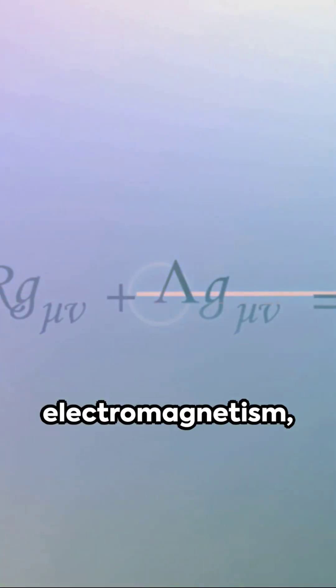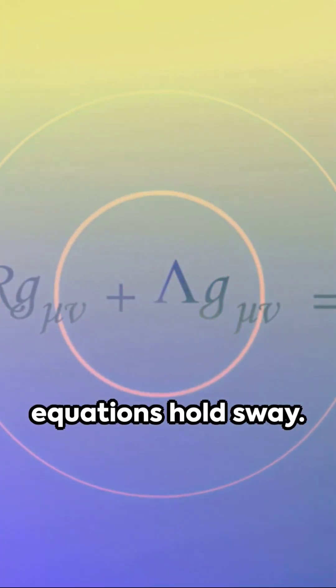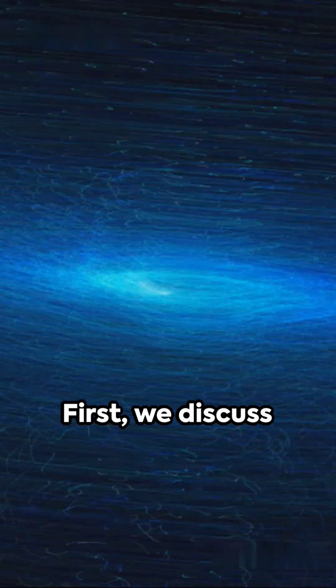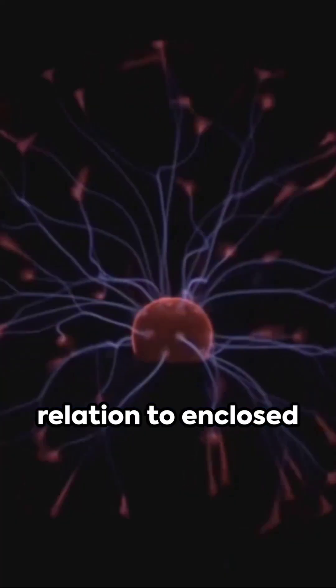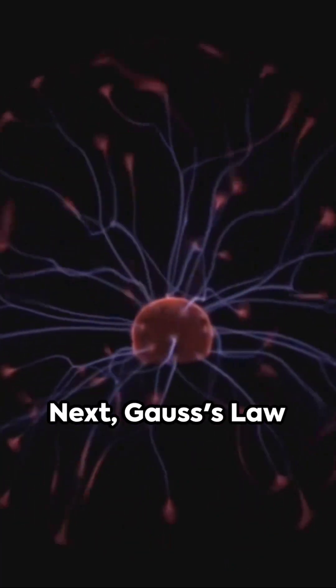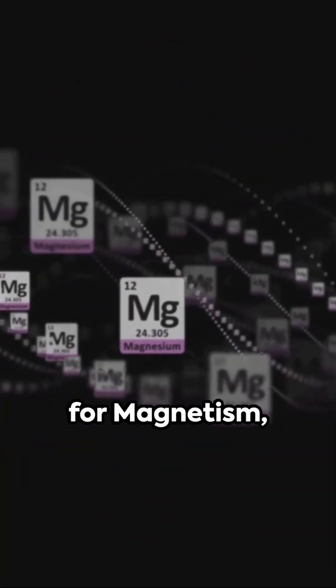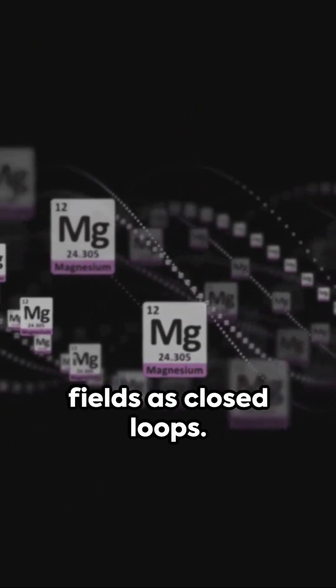Dive right into the heart of electromagnetism where Maxwell's equations hold sway. First, we discuss Gauss's law for electricity, defining electric flux in relation to enclosed charge and medium permittivity. Next, Gauss's law for magnetism, establishing magnetic fields as closed loops.